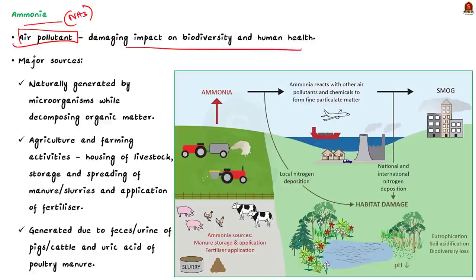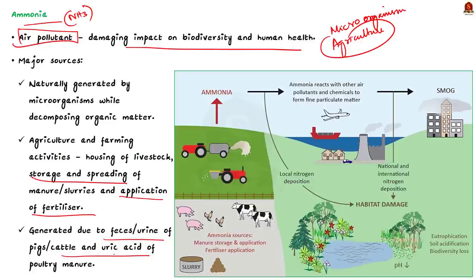So naturally, ammonia is generated by microorganisms when they decompose organic matter. So we can say that agriculture is the major source of ammonia. Now this ammonia is produced by many common farming activities and this includes housing of livestock, the storing and spreading of manure and slurries and even the application of fertilizer contributes to the production of ammonia. Here ammonia is generated because of nitrogen in the feces and the urine of pigs and cattle. It is also generated because of the uric acid of poultry manure.